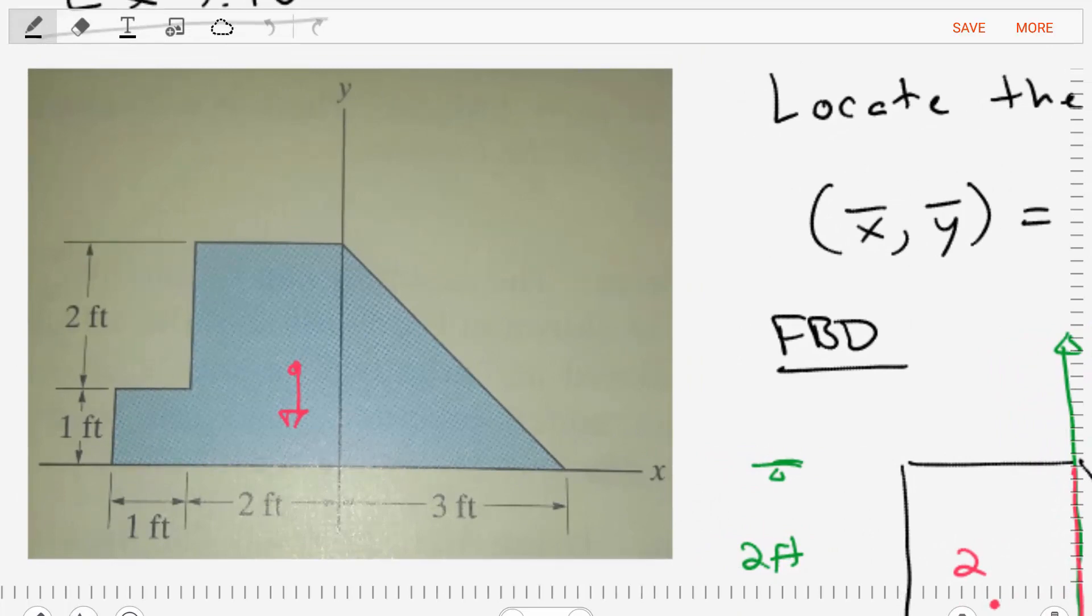We call it a composite body problem because what we want to do is separate and break up this complex structure into a series of simple structures, whether it is some rectangles, a square, a triangle, and so on. Simple structures that we can easily find the centroid for.